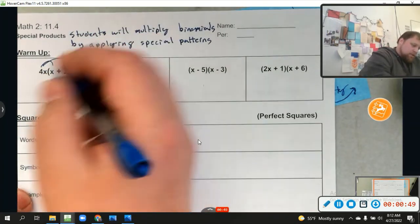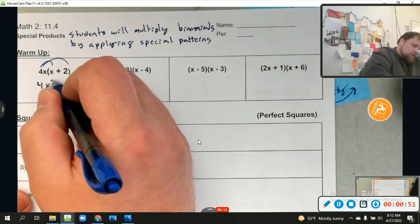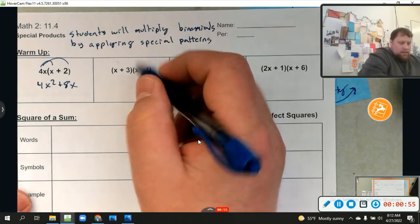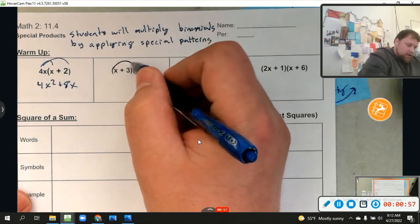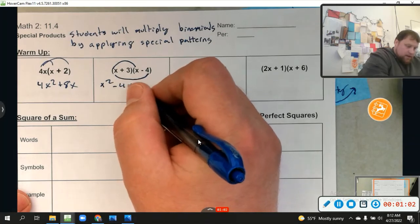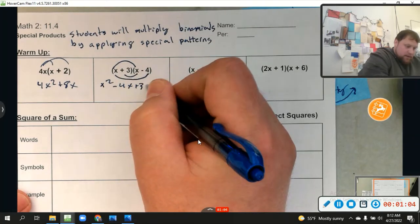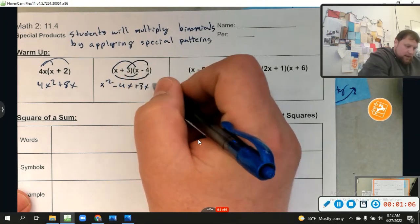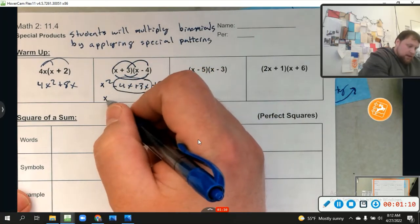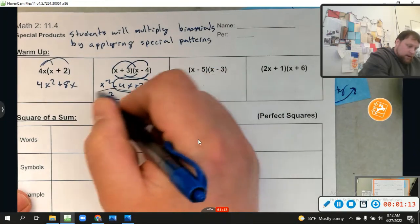So again, we just distribute, right? It's going to be 4x squared plus 8x. Right here, I'm going to do this one using foil. So first, x squared, outer, minus 4x, inner, plus 3x, and last, minus 12. Put those together, and I get x squared minus x minus 12. Yes.